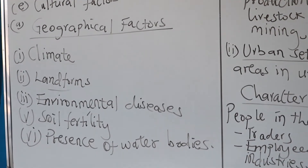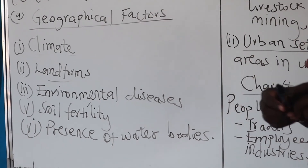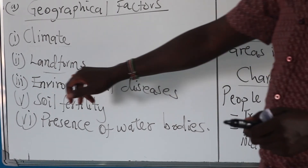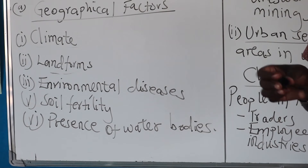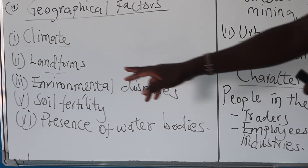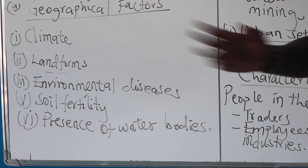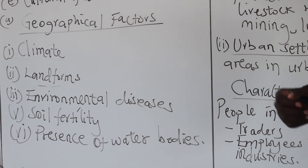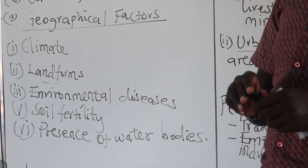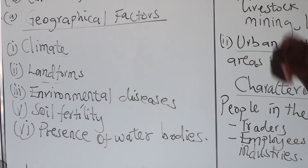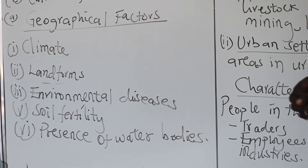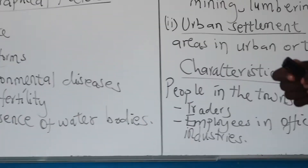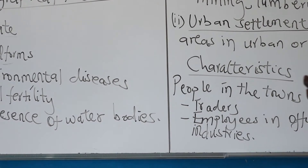Landforms basically have to do with the physical aspect of the land. When we talk about slopes, steep slopes will always discourage settlements because farming will be very difficult. Gentle slopes will always encourage settlements because farming operations will be easier. Similarly, rugged landforms will always discourage settlements — with a lot of stones, it makes it very difficult for people to settle. Smooth landforms will always encourage large settlements or dense population.